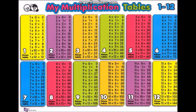8 x 0 is 0, 8 x 1 is 8, 8 x 2 is 16, 8 x 3 is 24, 8 x 4 is 32, 8 x 5 is 40, 8 x 6 is 48, 8 x 7 is 56, 8 x 8 is 64, 8 x 9 is 72, 8 x 10 is 80, 8 x 11 is 88, 8 x 12 is 96.